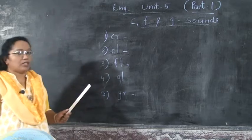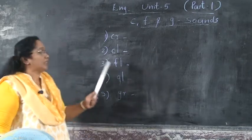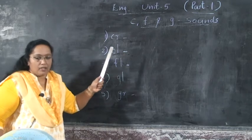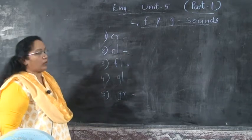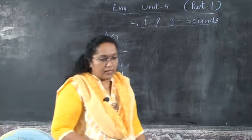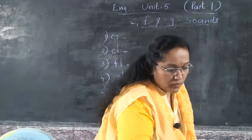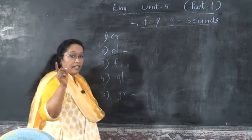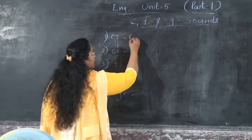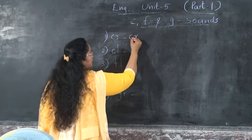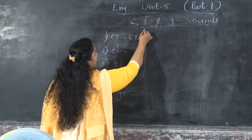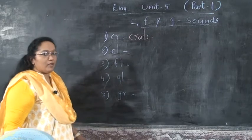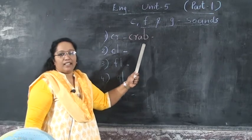First we are going to study two words starting with CR. Children, we will learn two words in CR. First word is crab — starting CR. CR-crab. C-R-A-B. Crab.